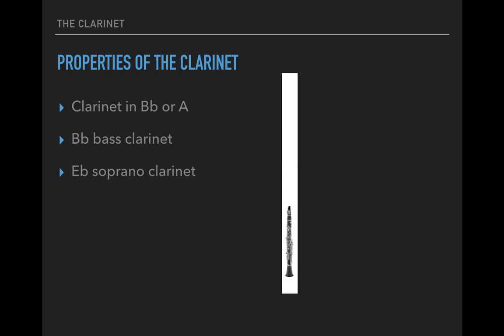The E-flat soprano clarinet — this is one of the few instruments that sounds higher than written; it's the other direction. It's very easy to confuse the A clarinet and the E-flat clarinet, so write this down for yourself. If you have a C major scale written for the E-flat clarinet, the resulting pitch will be a minor third higher — E-flat major. This could be very useful for accessing a higher range without it feeling extreme, or sounding extreme, or being too difficult for your player.